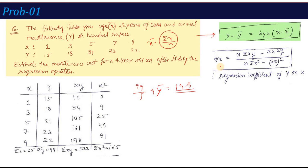With n equals 5, summation xy equals 533, summation x equals 25, summation y equals 99, and summation x-square equals 165, we calculate byx equals 0.95. For the mean values, x-bar equals summation x divided by n equals 5, and y-bar equals summation y divided by n equals 19.8. Now we can establish the relation: y minus 19.8 equals 0.95 times (x minus 5), which simplifies to y equals 0.95x plus 15.05.